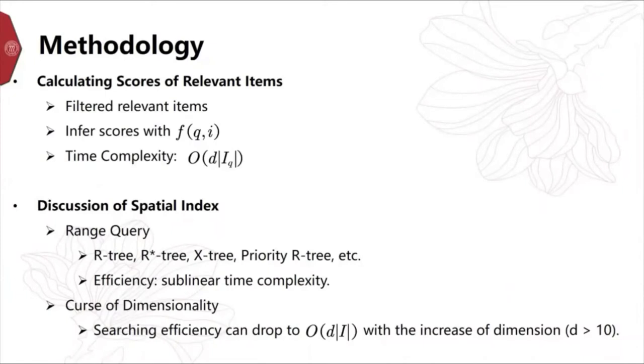We also considered using the spatial index method that supports range query. This method can find the geometry objects efficiently and achieve a sublinear time complexity. But existing spatial index usually suffers from the curse of dimensionality, and search efficiency can drop with the increase of dimension.